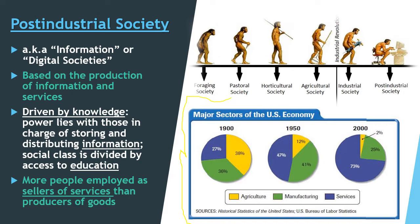Manufacturing was 36% in 1900, grew a little to 41% in 1950, and then went down to one quarter of the US economy by 2000. So in post-industrial societies, a lot of us work in service positions.